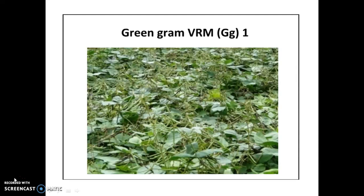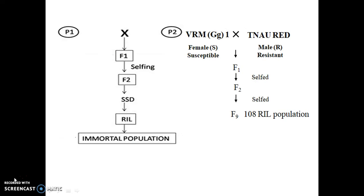Both the parents were crossed, F1 is obtained, which is selfed through the single-seed descent method, and at last recombinant inbred lines are obtained.